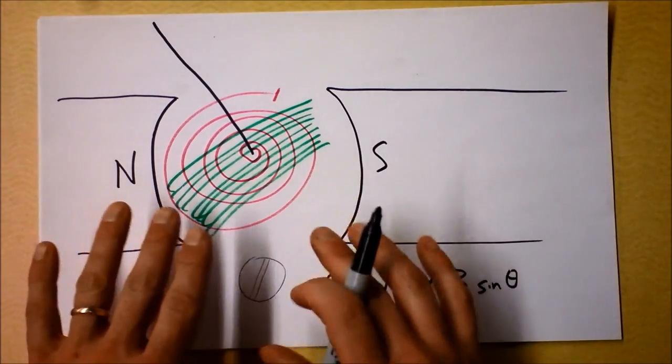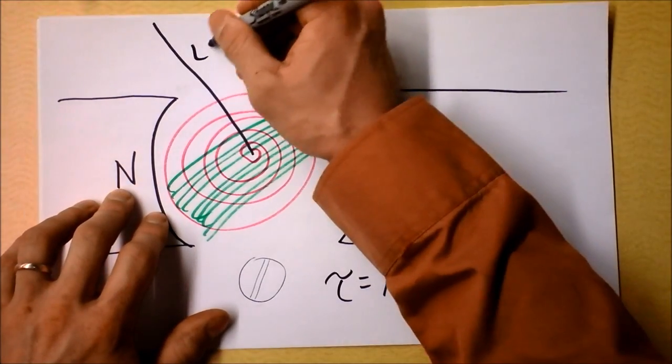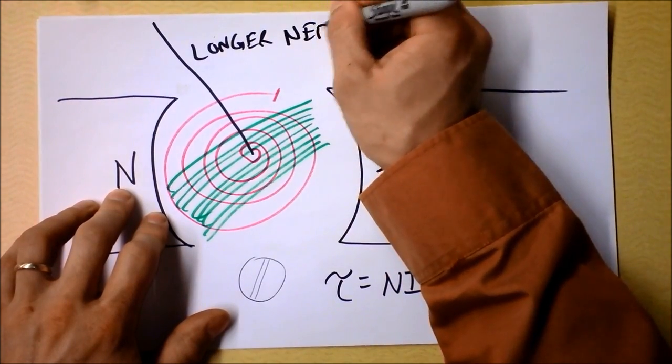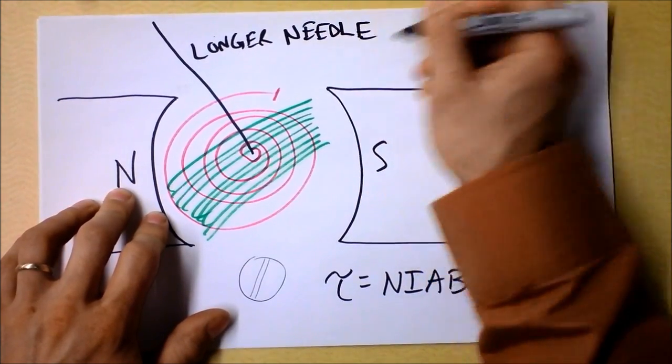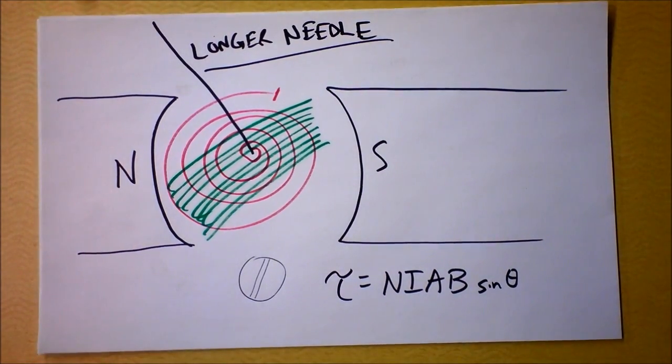All of those things are good. The one more thing that I could do that is independent of torque is I could make a longer needle. And there are some beautiful machines that were made a long time ago with that, and I'll show you one of them now.